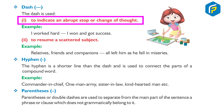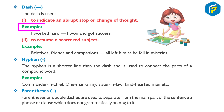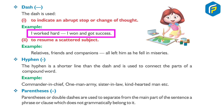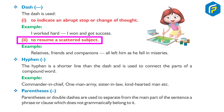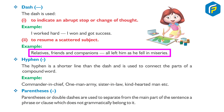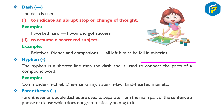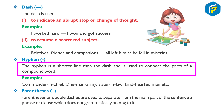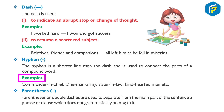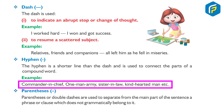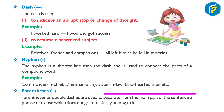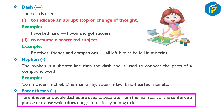Dash: The dash is used: one, to indicate an abrupt stop or change of thought. Example: I worked hard — I won and got success. Two, to resume a scattered subject. Example: Relatives, friends, and companions — all left him as he was in misery. Hyphen: The hyphen is a shorter line than the dash and is used to connect the parts of a compound word. Example: commander-in-chief, one-man army, sister-in-law, kind-hearted man.